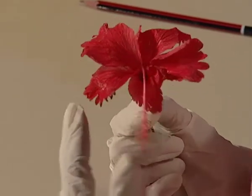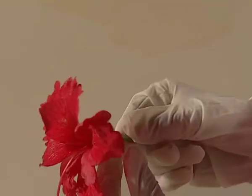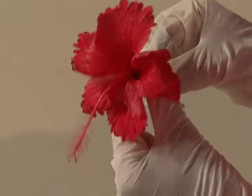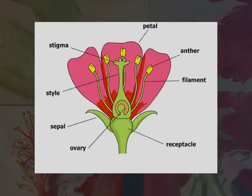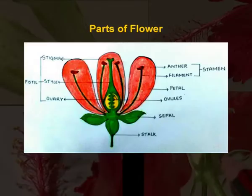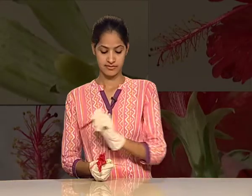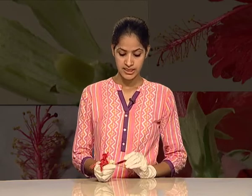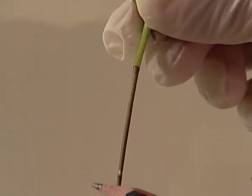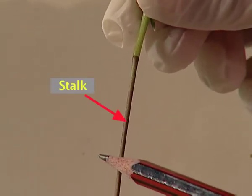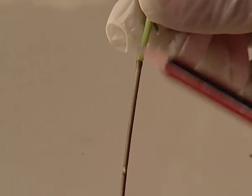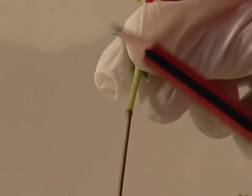Can you see the different structures in the flower? To know about these structures, I will compare my flower with the picture. This green tube-like structure is the stalk, which helps in holding the flower with the plant.